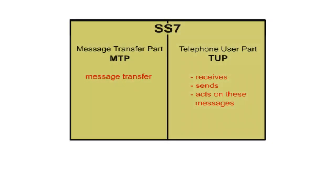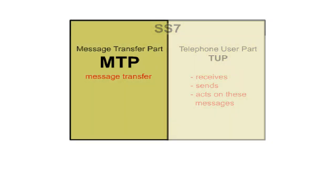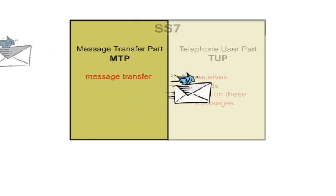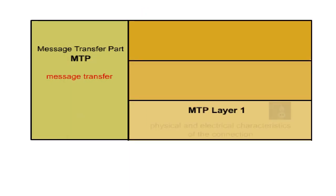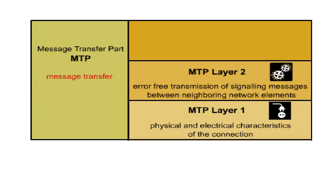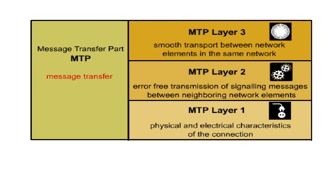The Message Transfer Part, MTP, represents the basis for the entire SS7 system. It transmits messages between network elements. MTP is composed of three layers. MTP layer one defines the physical and electrical characteristics of the connection. MTP layer two supports the error-free transmission of signalling messages between neighbouring network elements. MTP layer three is responsible for taking the message from any element in a signalling network to any other element within the same network.